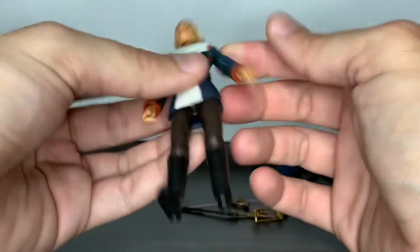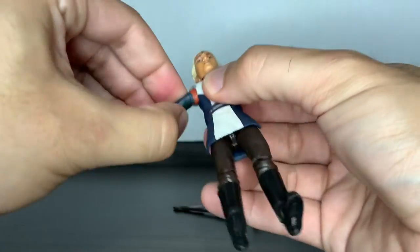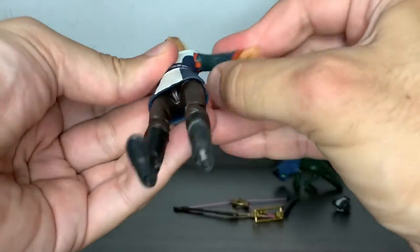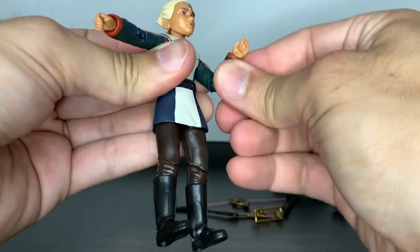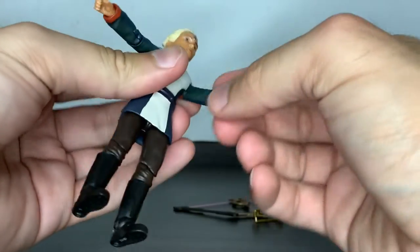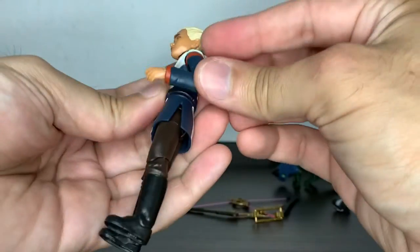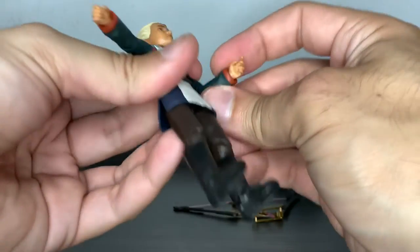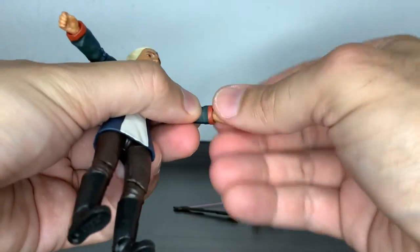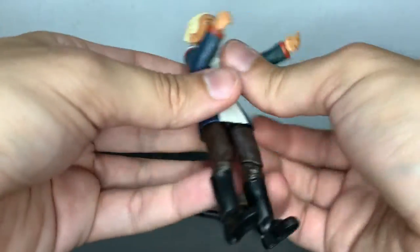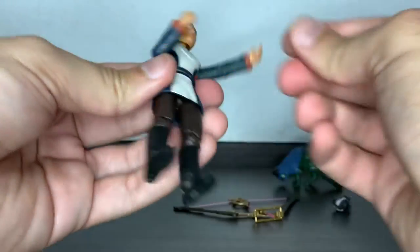You can lift the shoulders up to 90 degrees for a T-pose. No bicep swivel, but you have that in the elbow. It's a single jointed elbow, pinless, and you can go slightly over 90 degrees. Both wrists can go all the way around. This one goes in and out, and this one is vertical, which is good to have.